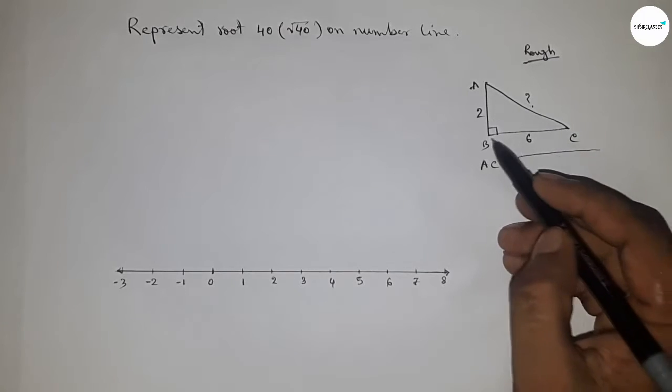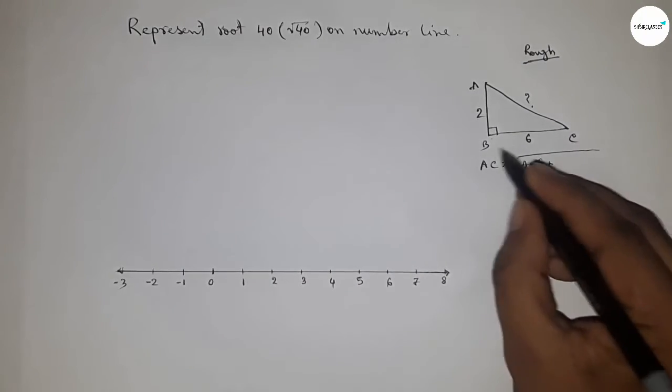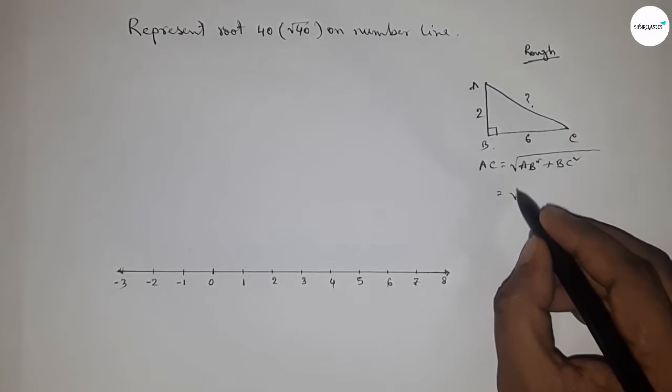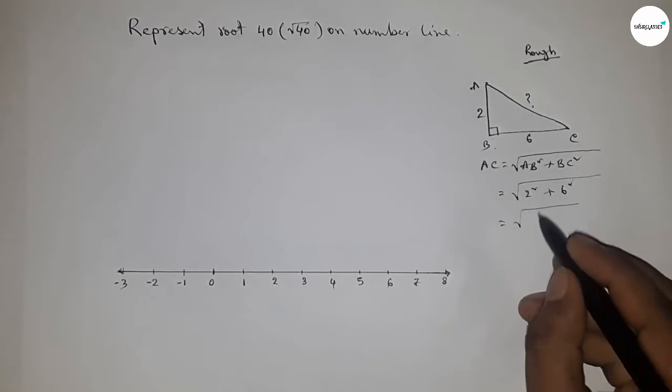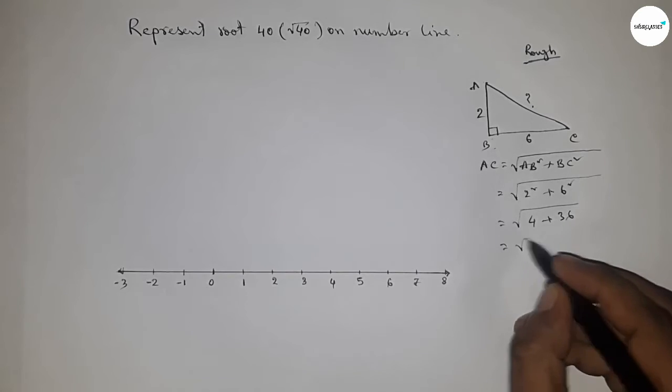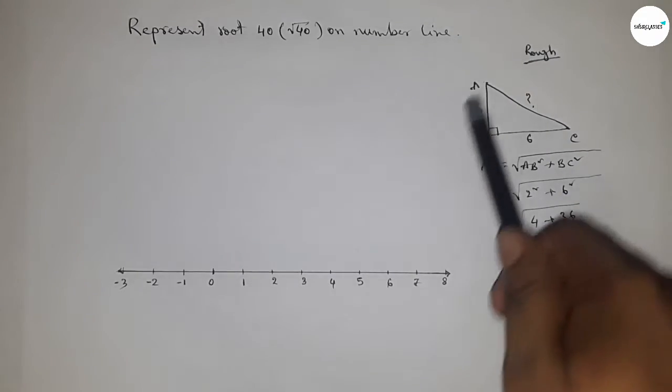By Pythagorean theorem, AC = √(AB² + BC²), that's mean height squared plus base squared. So this is √(2² + 6²), so √(4 + 36), so this is √40 units. So this concept applying between 0 to 6.